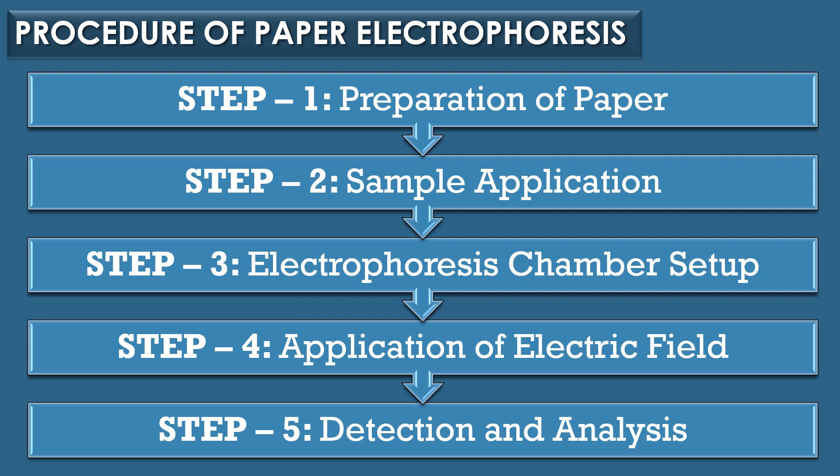Step three is electrophoresis chamber setup: the paper strip is positioned in a chamber filled with the buffer solution. Both ends of the strip should be in contact with the buffer to ensure electrical conductivity. Electrodes — anode and cathode — are then placed at each end of the chamber. Step four is application of electric field: upon connection to the power supply, an electric field is established across the paper strip and charged molecules migrate towards the electrode of opposite charge.